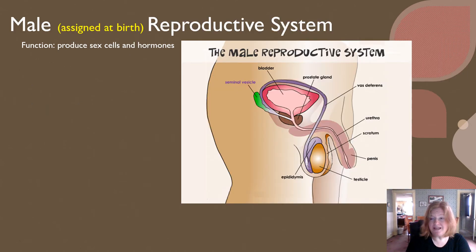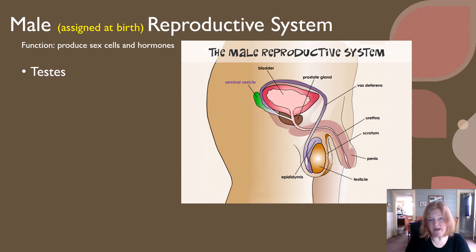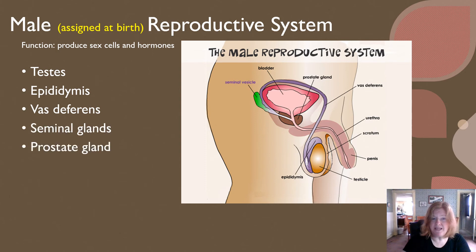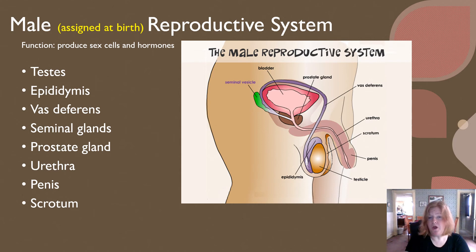Finally, the reproductive system. The male-assigned-at-birth reproductive system functions to produce sex cells and hormones. It includes the testes, the epididymis sitting on top of the testes, vas deferens — that's the tube cut in a vasectomy — seminal glands, the prostate gland, the urethra, the penis, and scrotum. The scrotum provides temperature control for the formation of sperm in the testes.